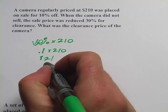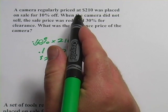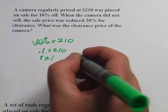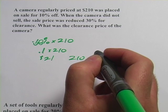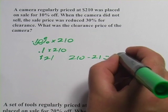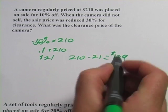So if I pay $21 off, I have to take 210 minus 21 to get my answer there of what the cost of the camera is, and that's $189. So that's our first sale price.